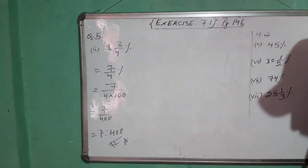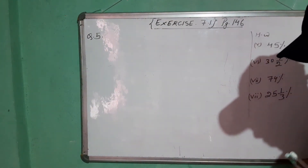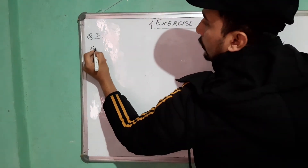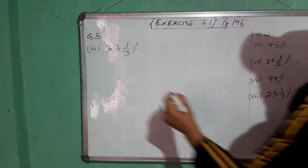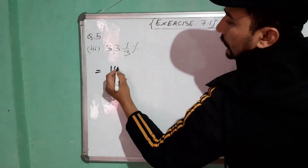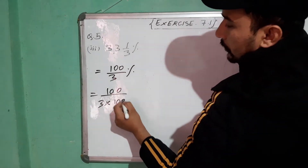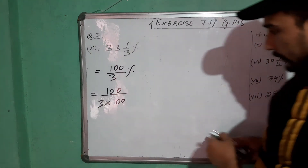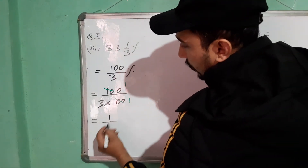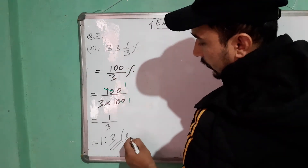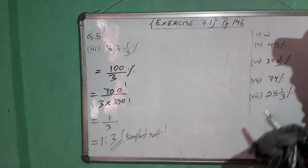Simplest ratio. Next question, number 3: 33⅓%. Convert to improper fraction: 3×33 is 99, plus 1 is 100, so it becomes 100/3%. Now divide by 100 to remove the percentage: 100 upon 3 into 100. The 100s cancel, leaving 1/3. So the simplest ratio is 1 is to 3.